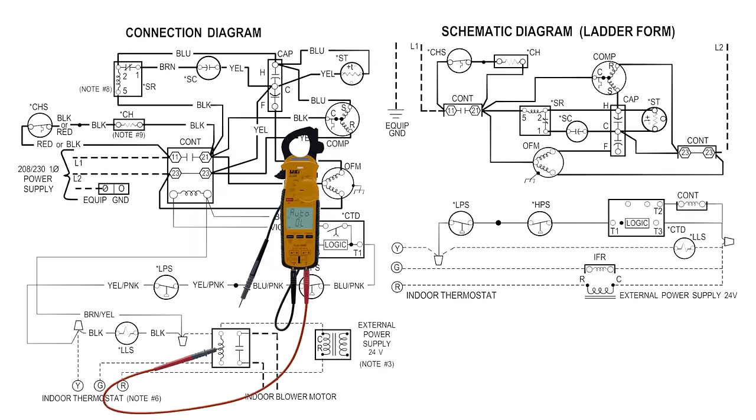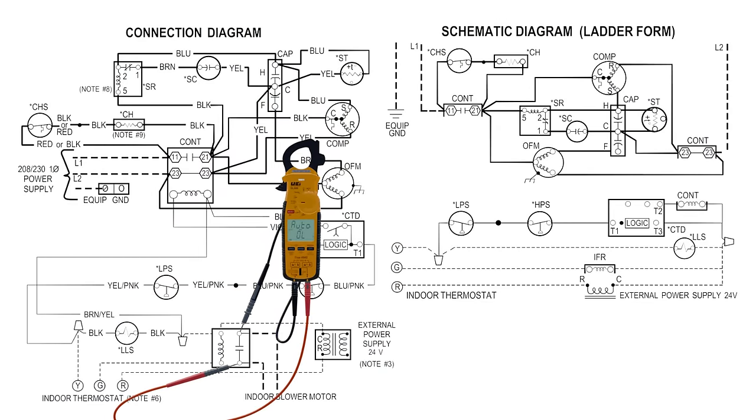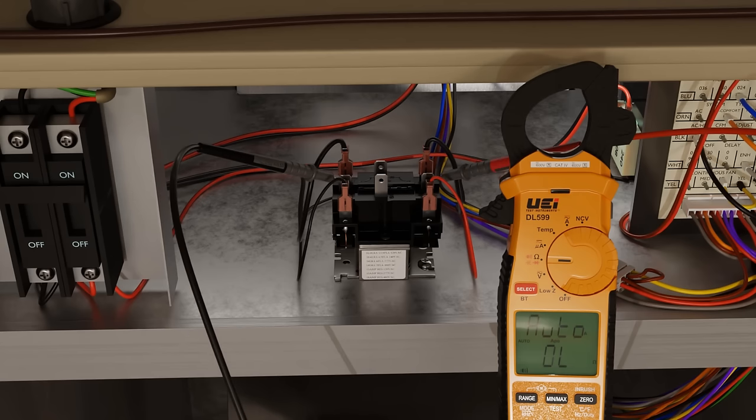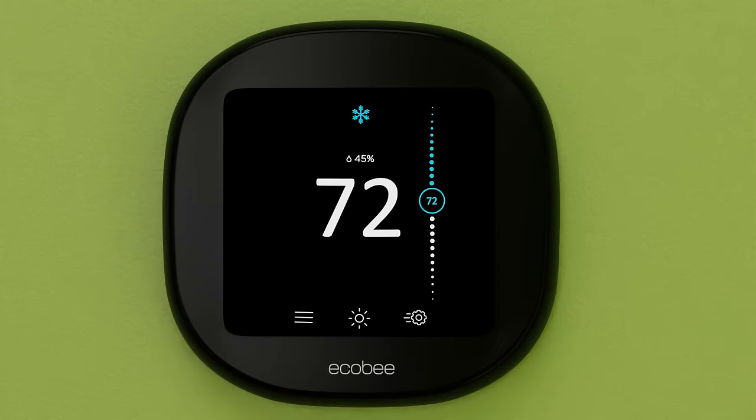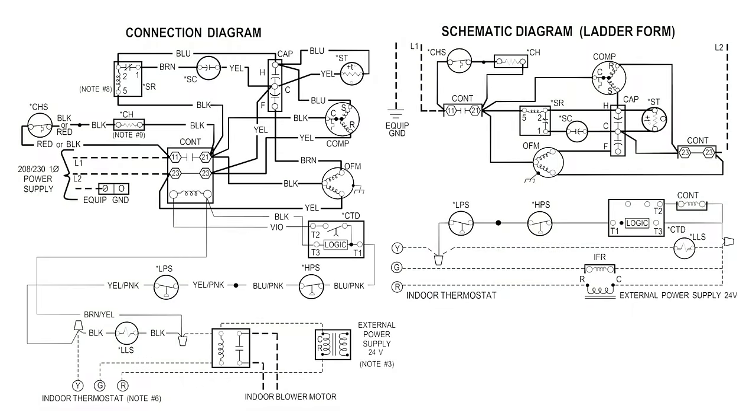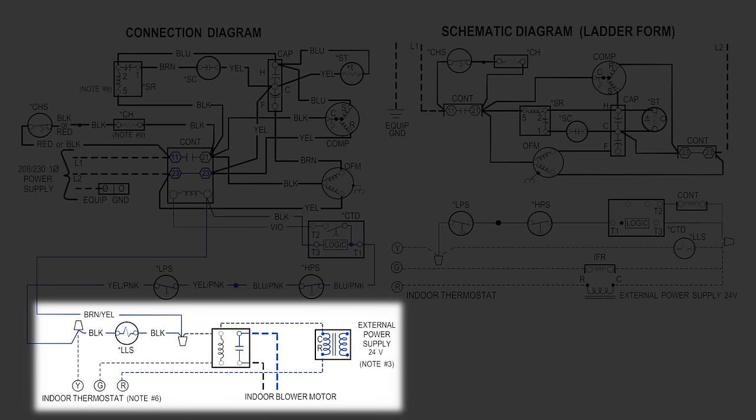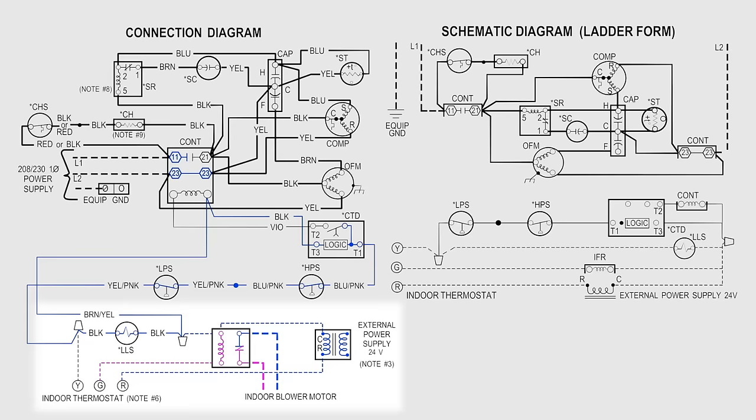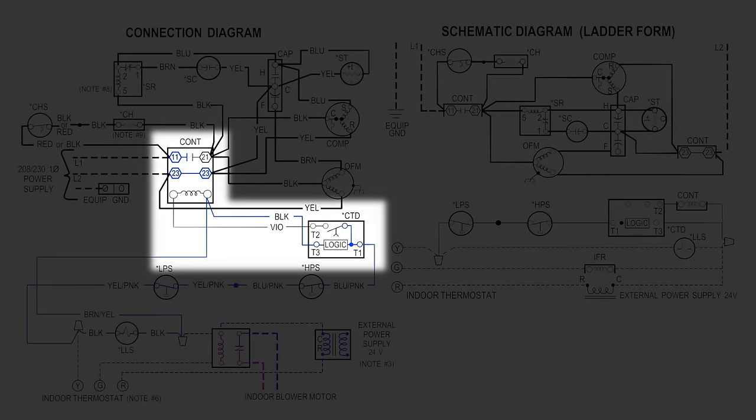Now, we're going to show this on a blower relay. Starting with normally open, and then going to normally closed. Now, let's energize the circuit and show how it switches. Normally open contacts close on the blower relay, when the coil is energized. And the normally open contactor goes closed.